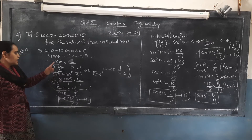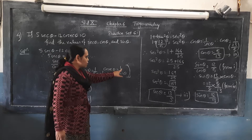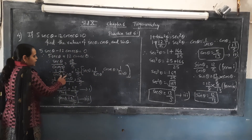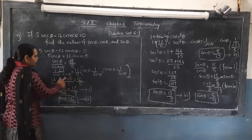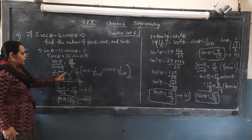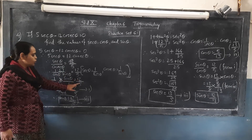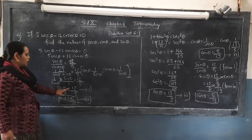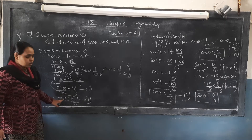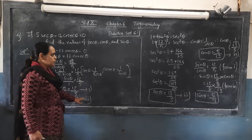We know that sec θ is equal to 1 upon cos θ, and cosec θ is equal to 1 upon sin θ. So 1/cos θ divided by 1/sin θ equals 12 upon 5. When we change division to multiplication, we take the reciprocal of the second term, giving sin θ upon cos θ equals 12 upon 5. And sin θ upon cos θ equals tan θ equals 12 upon 5. We note this as statement 1.